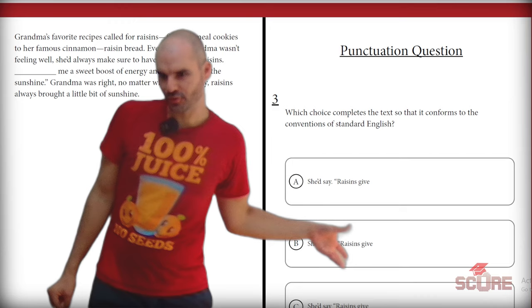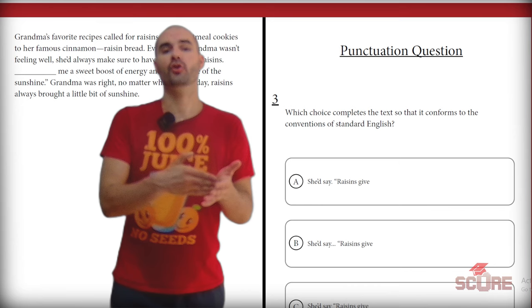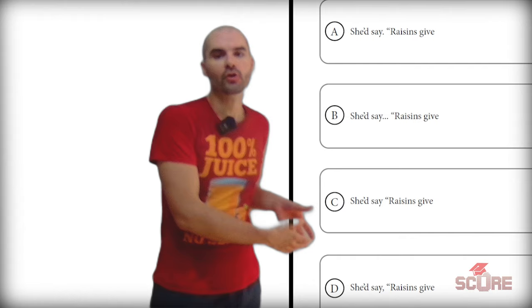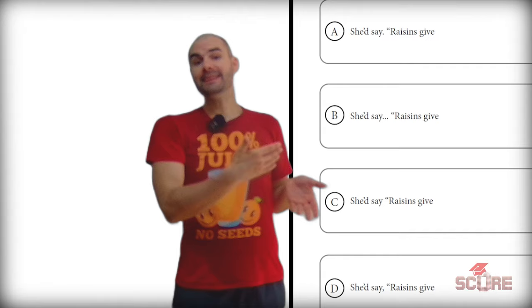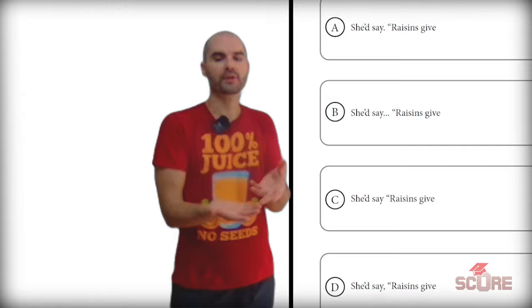If you see a question like this and answer choices like this, you probably don't even need to look at the paragraph, because all we're looking for here is the correct way to punctuate dialogue. Anytime we do dialogue, if we introduce the speaker — say, by using 'she said' — then we have to use a comma after that verb 'say,' and then we're going to use quotes to open the quote and again to close the quote. Right now, the only option here that does that correctly is D.